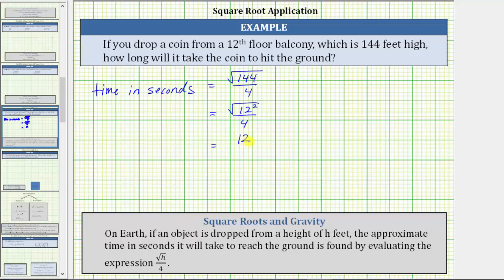Giving us the expression 12 divided by 4. In this form, we can also think of the square root as undoing the squaring, giving us one factor of 12. And 12 divided by 4 is equal to 3, which means it will take the coin approximately 3 seconds to hit the ground.